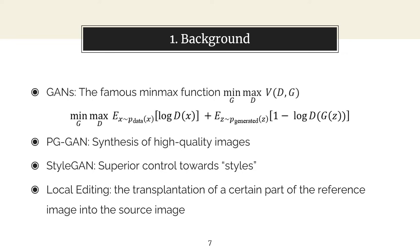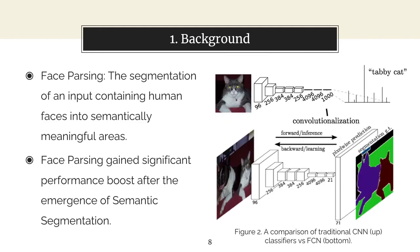Local editing could be far more than just a tool for content creators like photographers and video editors. It can also be used in areas like preserving privacy, digital forensics, and areas where not enough data is given — for example, facial emotion recognition. One key area of local editing is the generation of masks, which refers to the area to be transplanted. In face editing, face parsing achieves this. Face parsing refers to the segmentation of an input containing human faces into semantically meaningful areas, such as nose, eyes, or ears. In recent years, semantic segmentation has significantly boosted the performance of face parsing.